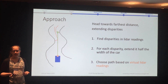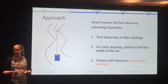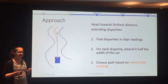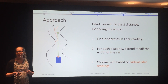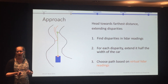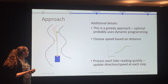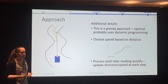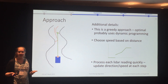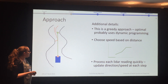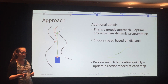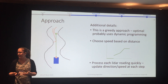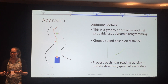Using that, we figure out the furthest distance and that's the direction we travel. We make local decisions and are pretty confident that this very closely approximates the global optimal shortest path. It is greedy, so we might not always be making the best decisions, but we're very close. We choose our speed based on distance, using a piecewise linear function to determine speed based on the furthest distance that we see.